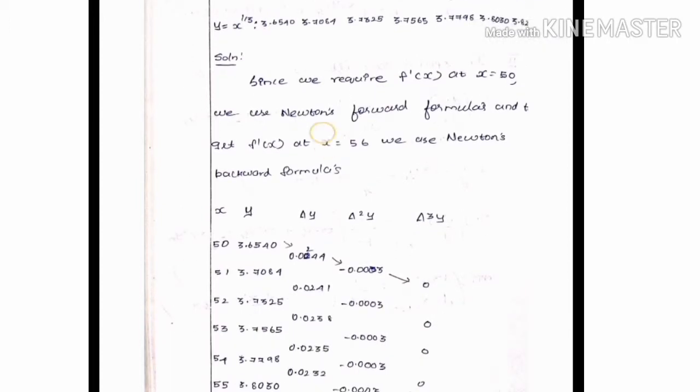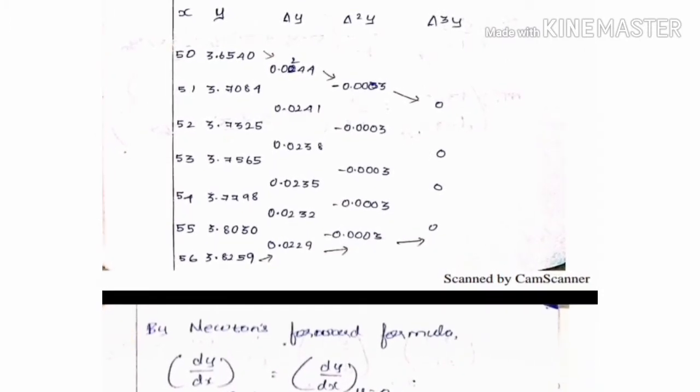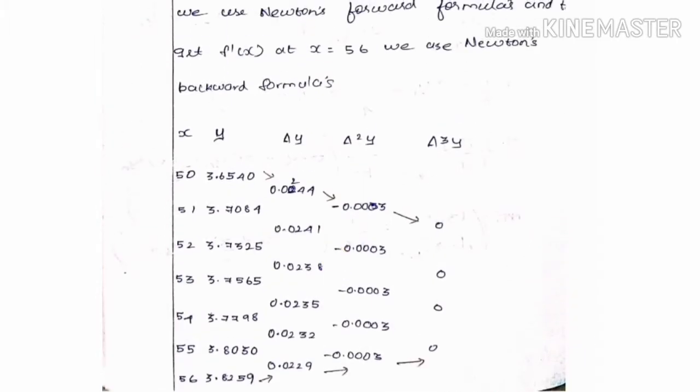Now let's set up the difference table with columns: x, y, delta y, delta squared y, and delta cubed y. Let's fill in the x and y values accordingly.